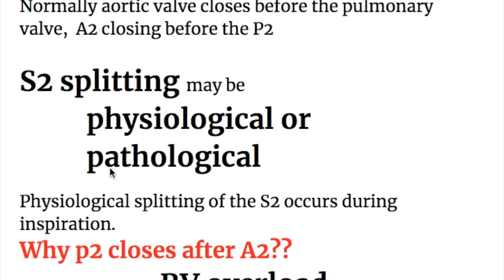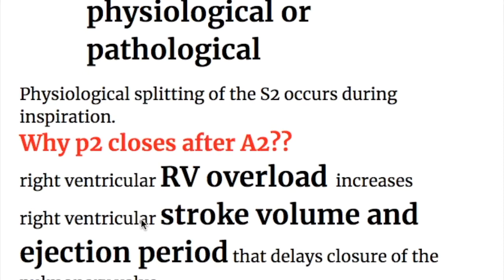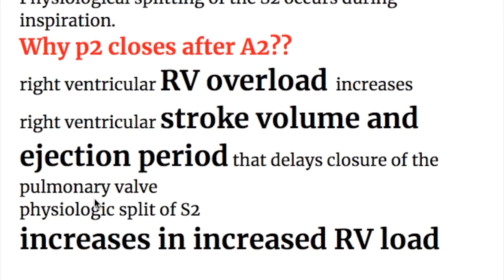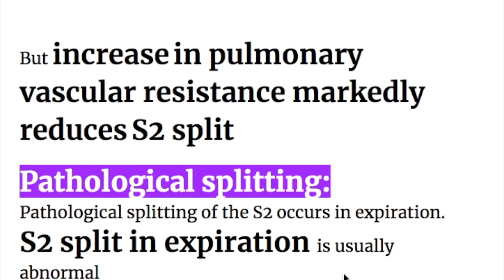Second heart sound splitting may be physiological or pathological. Physiological splitting occurs during inspiration because right ventricular overload increases right ventricular stroke volume and ejection period, delaying closure of the pulmonary valve so it closes after the aortic valve. Physiological split increases with increased RV load but decreases when there is increased pulmonary vascular resistance.